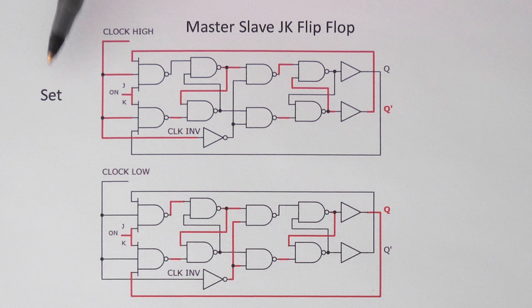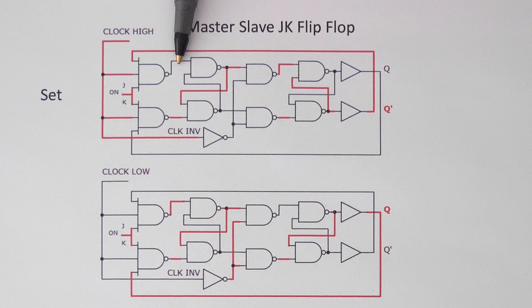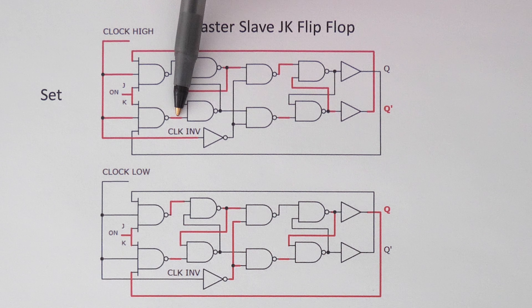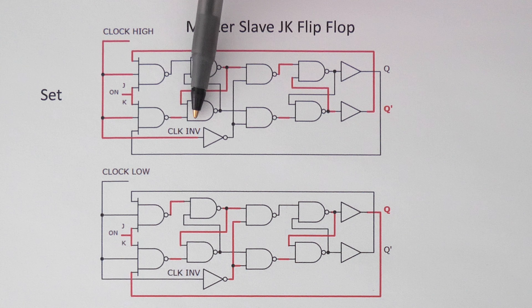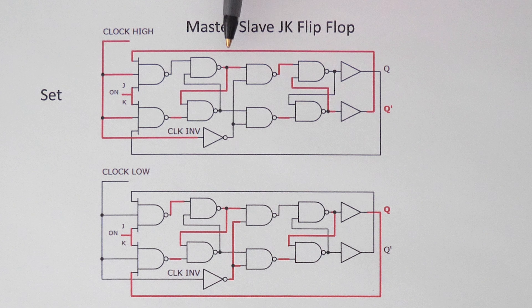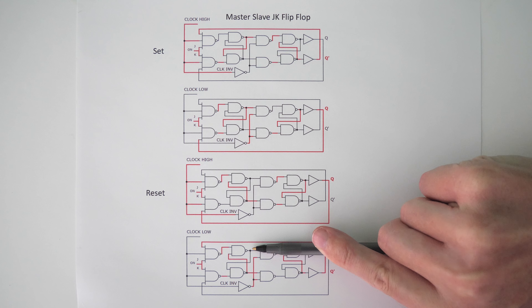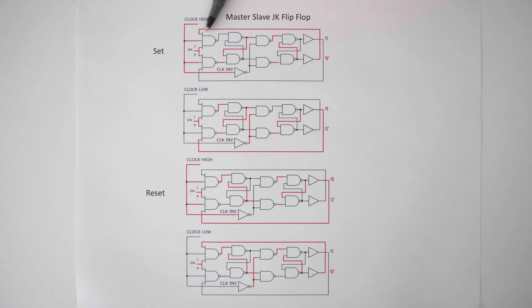Let's look at what happens during the set phase. The clock goes high, and you'll notice that all three inputs to this top NAND gate are on, so the output is going to be off. The bottom NAND gate has two inputs on and one off, so the output is going to be on. Both of these inputs here are on, so the output here is going to be off. For this top NAND gate, both inputs are off, so the output is going to be on. This is the output of the master portion of the circuit, and right now it is on — previously it was off. So whenever the clock went high, the master portion of the circuit switched from being off to being on.